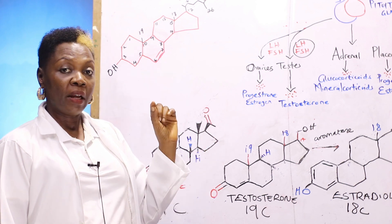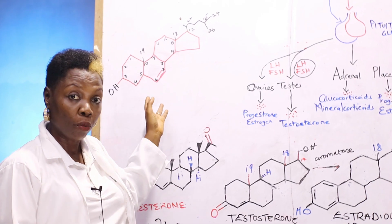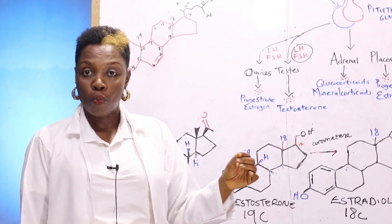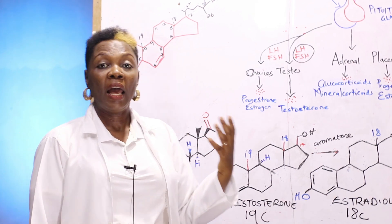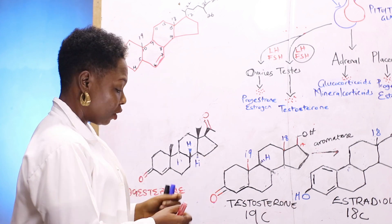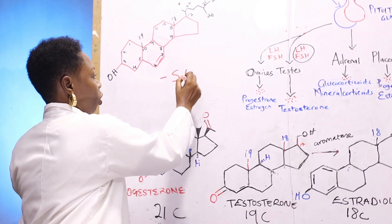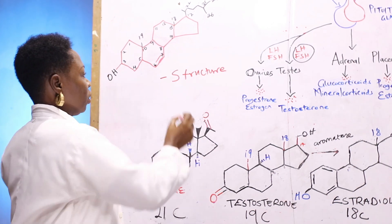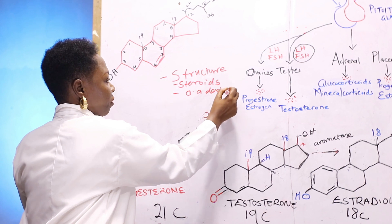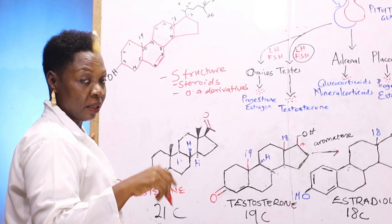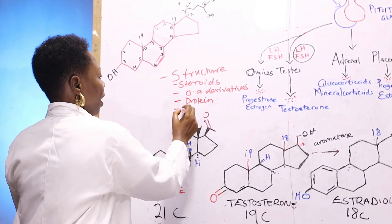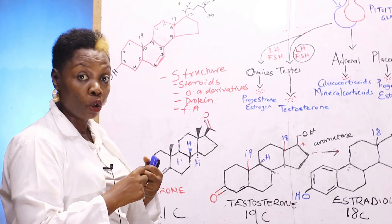A derangement in insulin results in a pathological condition called diabetes mellitus. By way of recap, classification of hormones based on structure: you have the steroid hormones, which are all derived from cholesterol; the amino acid derived hormones such as thyroxine and melatonin; the protein hormones such as insulin; and the fatty acid derived hormones, known as the eicosanoids.